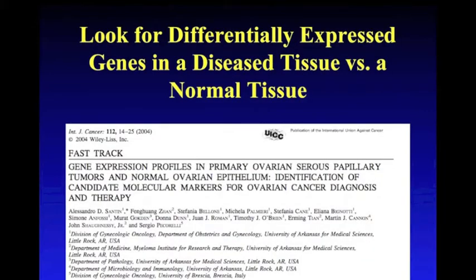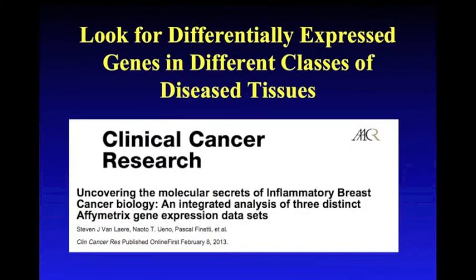One possible comparison is between diseased and normal tissues. For example, in this paper, differentially expressed genes in ovarian tumors compared to normal epithelium were identified. These can be used either as diagnostic biomarkers or to identify pathways to drug target. Another example is comparing different types of diseased tissues, such as different breast cancers in this paper. This can aid in classifying disease subtypes and identifying drugs that could specifically target pathways involved in certain subtypes of the disease.